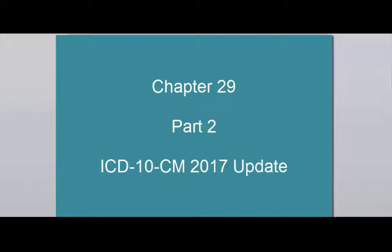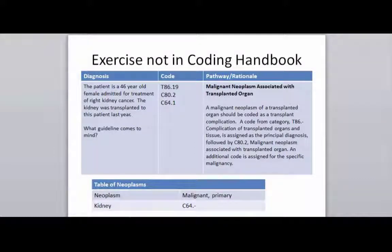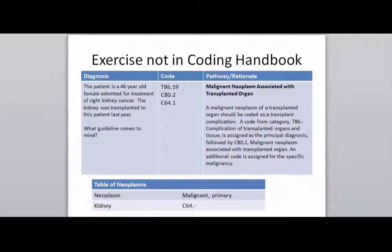Here's another example not in your coding handbook. I wanted to give you some examples of cases that use more of the guidelines. This particular exercise involves a 46-year-old female admitted for treatment of right kidney cancer. The kidney was transplanted to this patient last year. If you've been listening over the last several lectures, you should read your guidelines first, then attempt to do your exercises, then read your guidelines again, always relating those guidelines back to the exercises. There are enough people getting transplants now that this could easily come up when you're in the field.